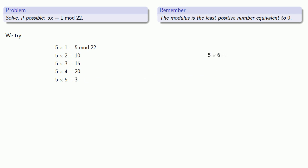How about 5 times 6? Well, 5 times 6 is 30, which I can reduce by removing multiples of 22. And again, since we're working mod 22, 22 is like 0 and we can ignore it, leaving us with 8.